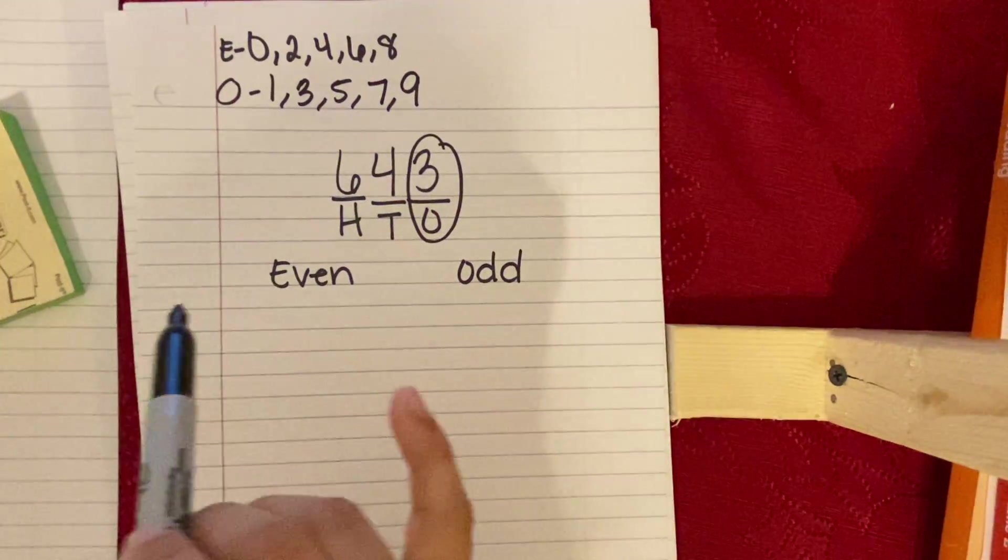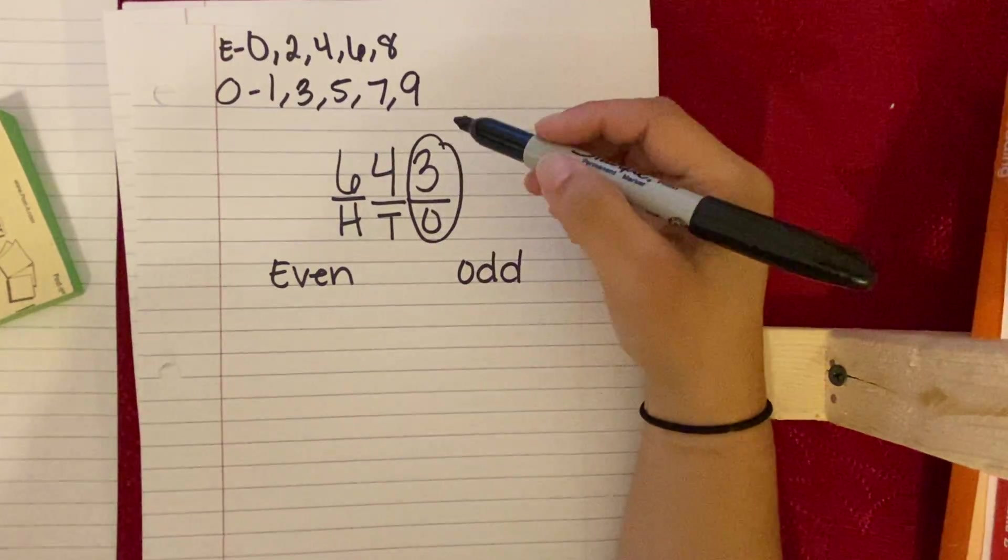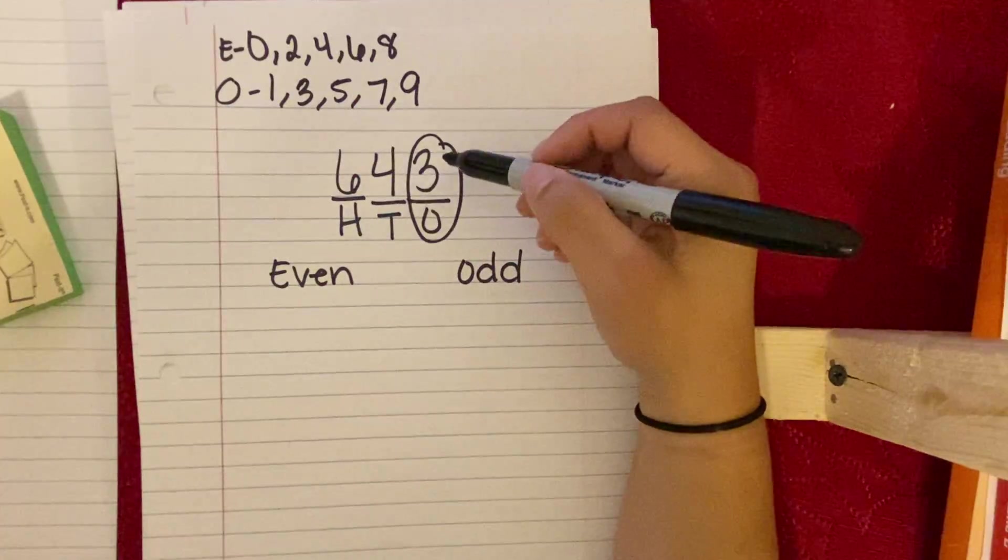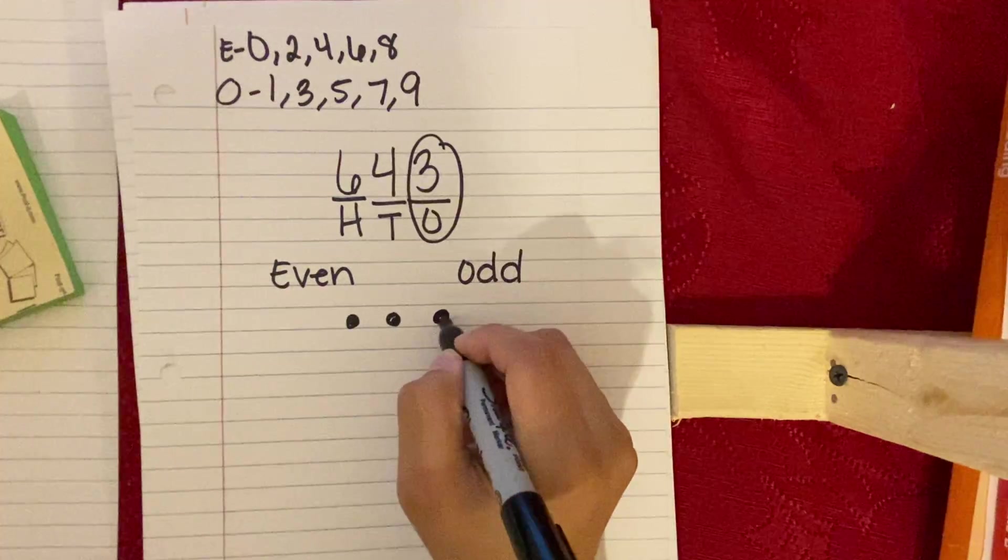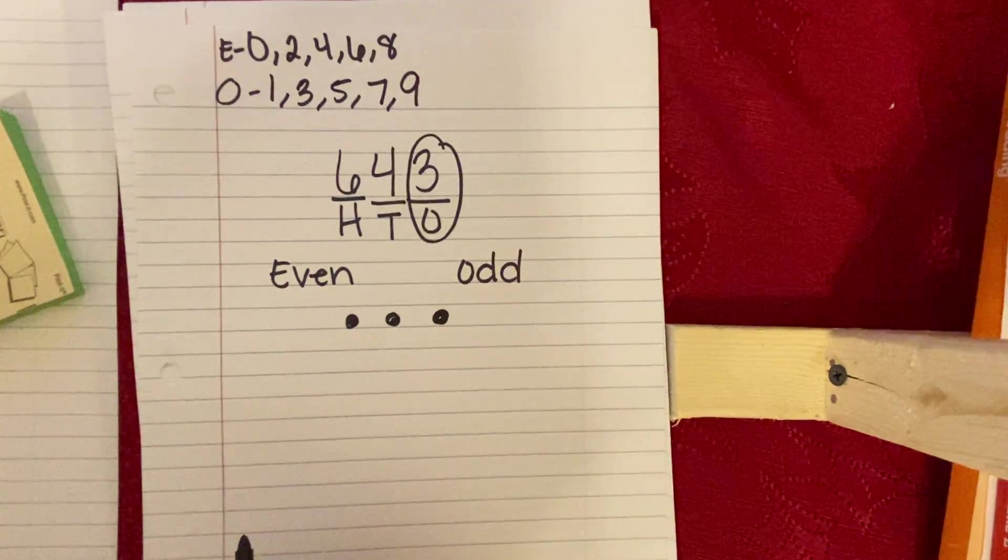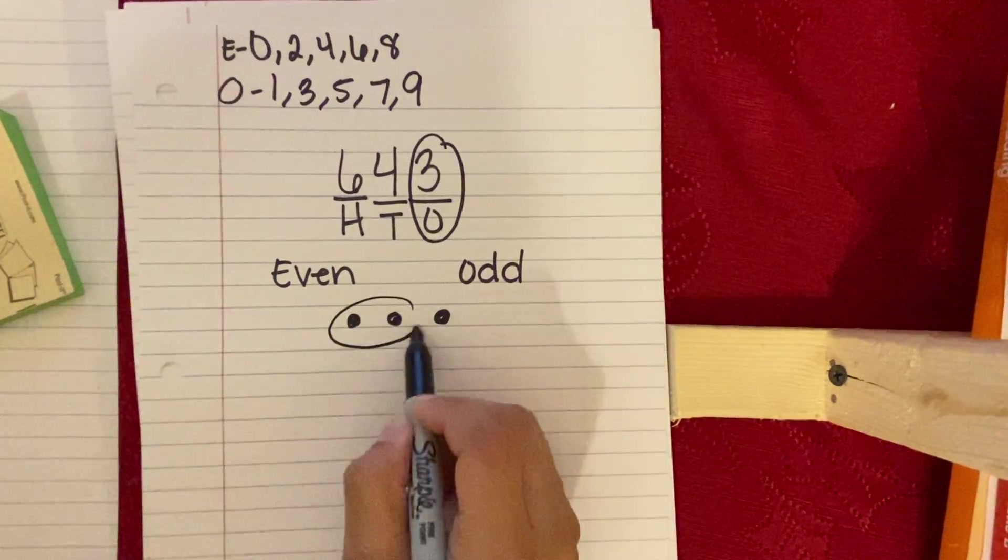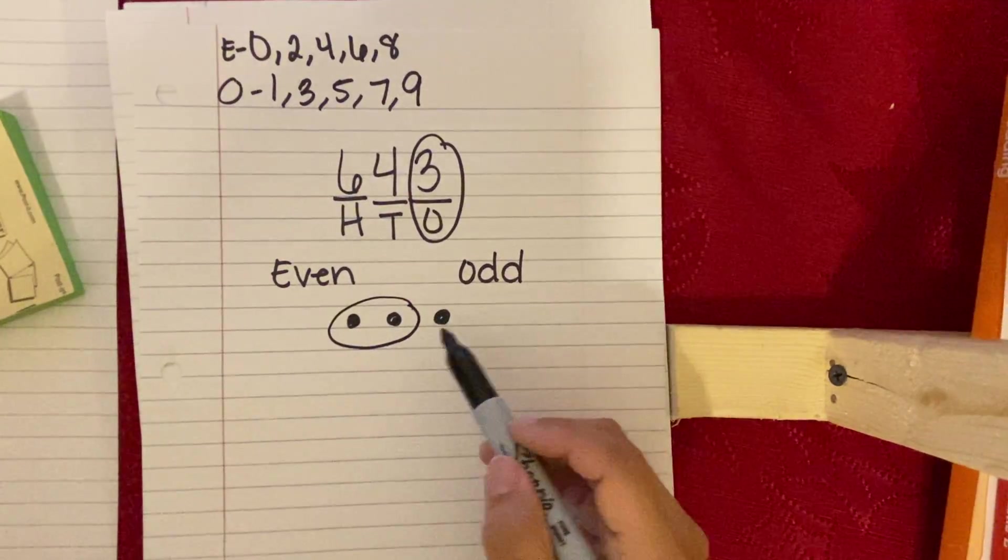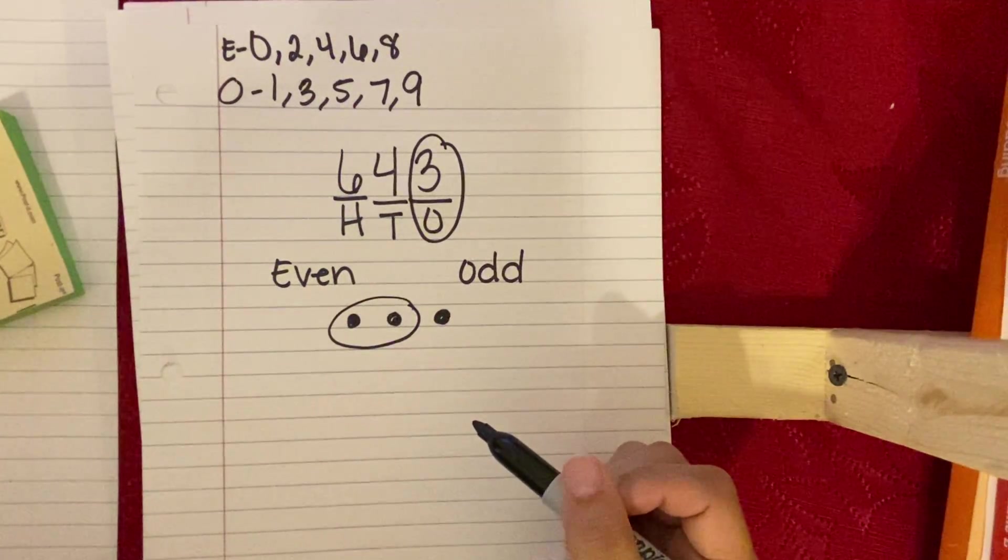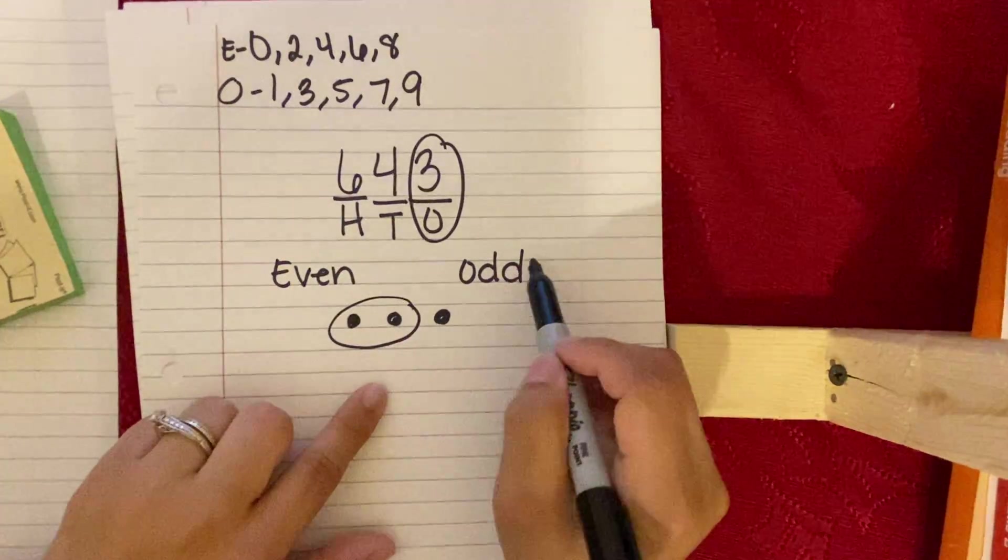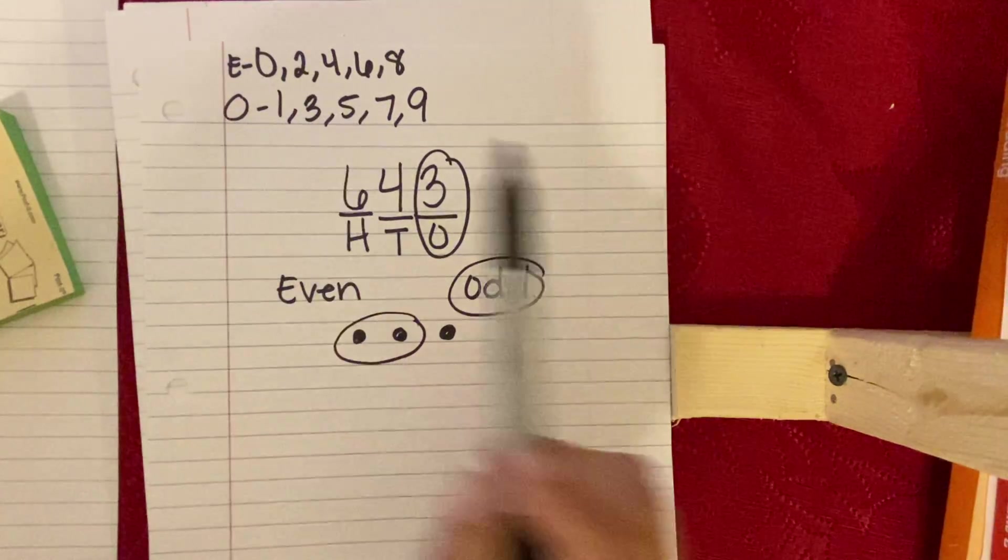So no matter, again, even with odd, no matter how many digits we might have, we always look at the last digit. So in this case, our digit is three. One, two, three. Can I divide that into equal groups? Well, one, that can be a group. Oh, look. I have one left over. So when I have one left over, what is that? Correct. That is going to be odd.